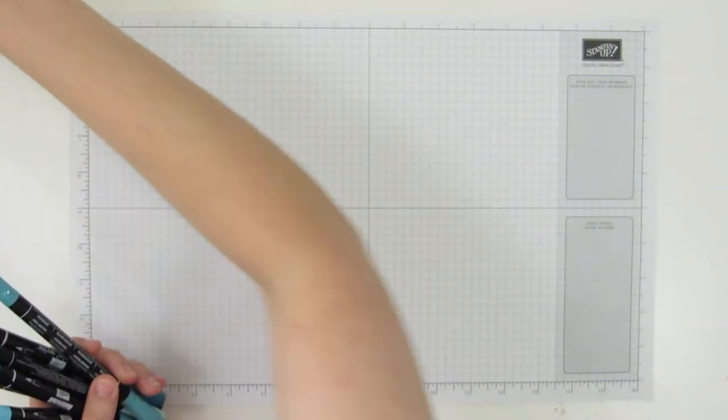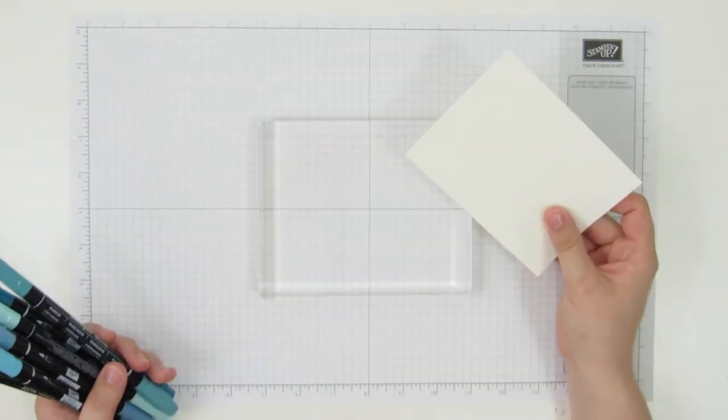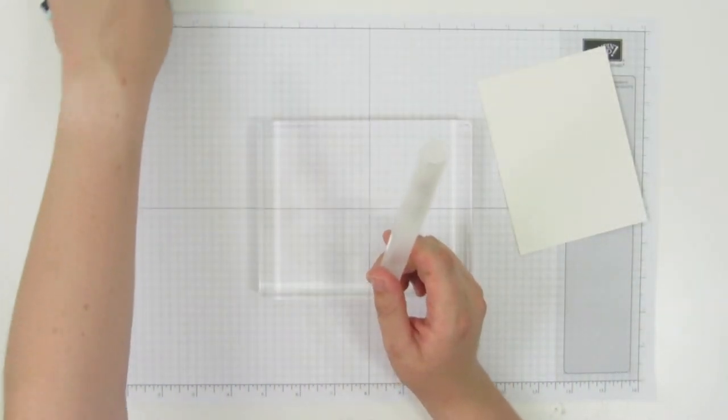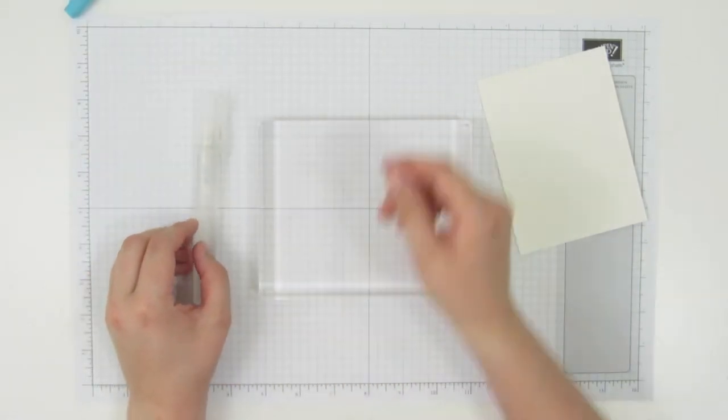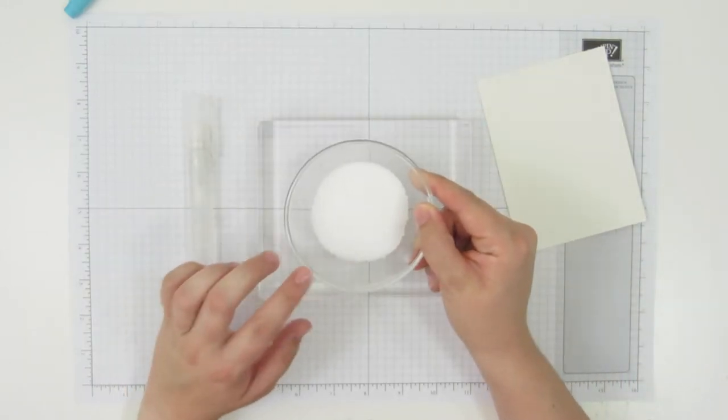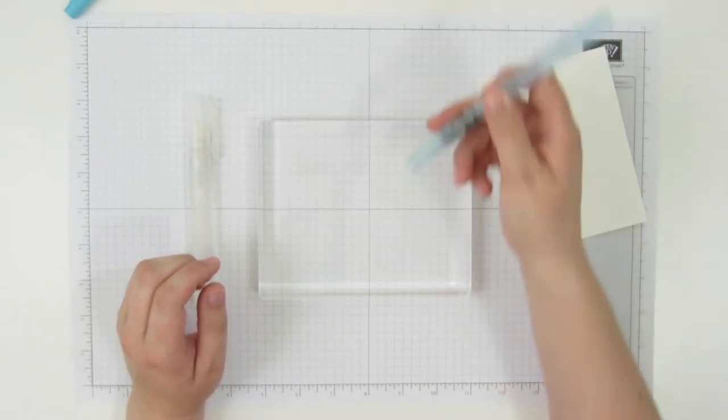You're also going to need a clear block, some pieces of watercolor paper, and a spritzer filled with either alcohol or water. I'm using alcohol here just because it dries a bit quicker. You're going to need some salt - any type of salt will do. I'm using kosher salt here and an aqua painter with some water in it.